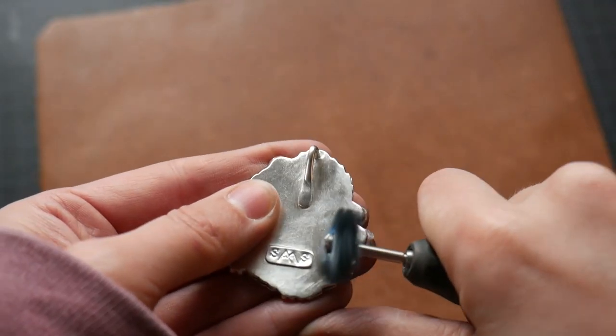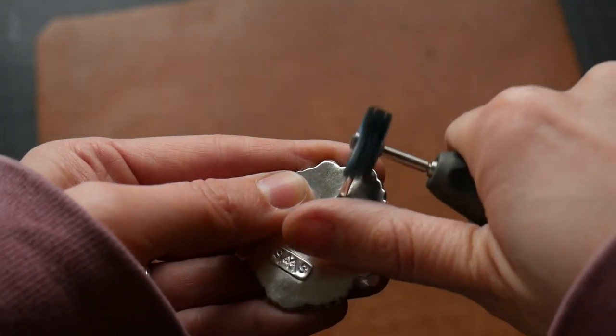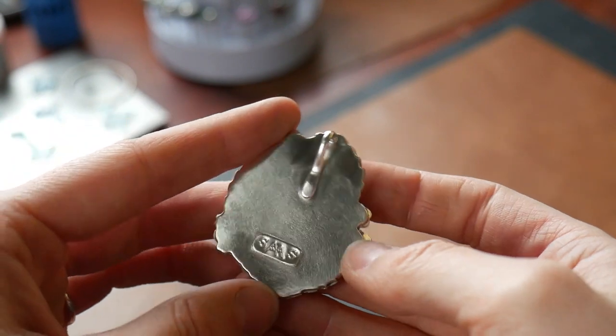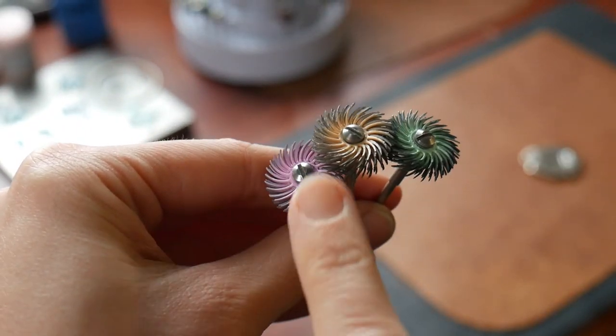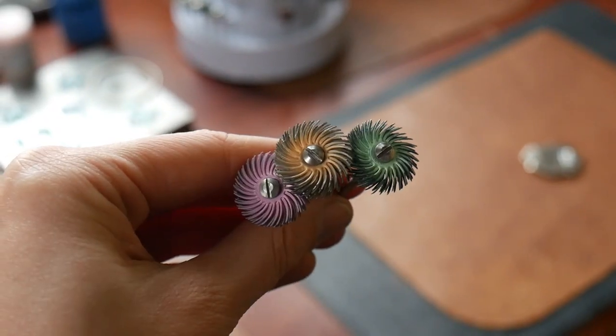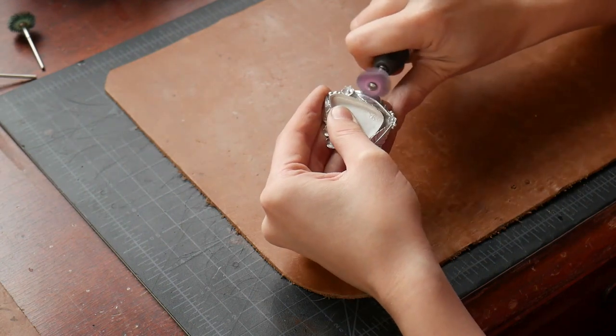Now, if you want, you can end your polishing with the blue radial disc, and this will leave your piece with a nice satin finish. I, however, am going to continue with my pink, peach, and green discs because I want to give my piece a little more of a shinier finish.